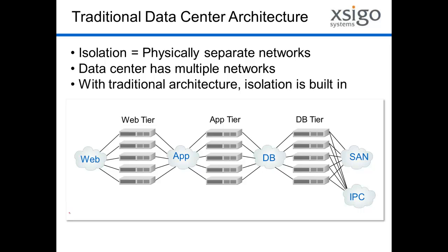In the simplest form, I/O isolation simply means maintaining physically separate networks. You wouldn't want a network connected out to the internet connected directly to your network going to your SAN. It would open up a lot of opportunities for data theft, data corruption, and general bad behavior. So we keep these things separate to make sure that everything is controlled in terms of access.